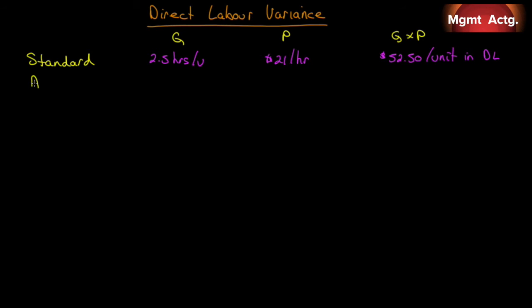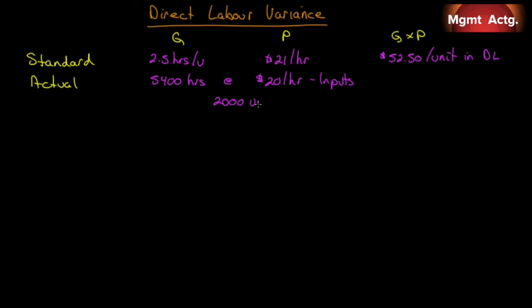What did we actually pay for direct labor? We used 5,400 hours and only paid $20 an hour, so we can see we're going to have a favorable rate variance already. We need our outputs — we made 2,000 units.